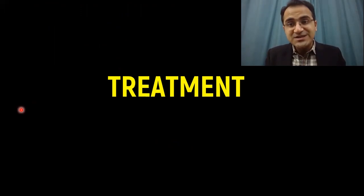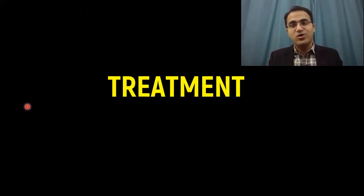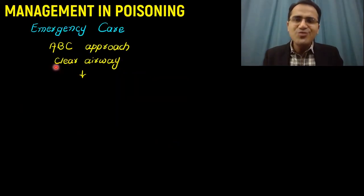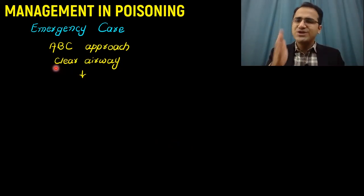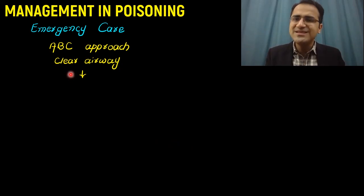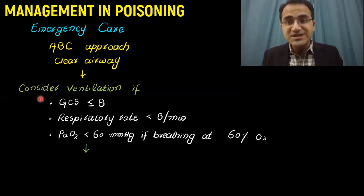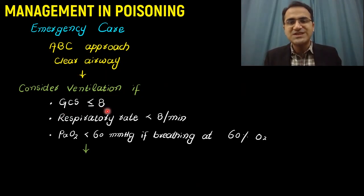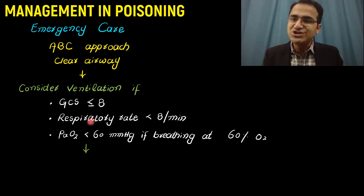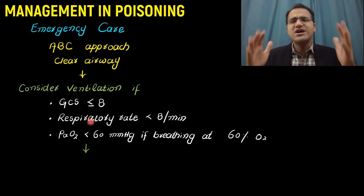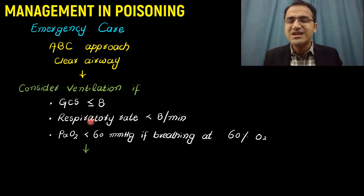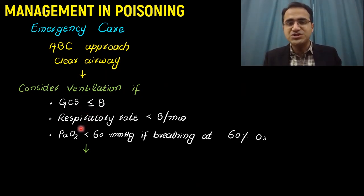Coming to the general management and treatment of poisoning. First and foremost is the ABC approach: airway, breathing, circulation. Protect and clear the airway, and consider intubation and ventilation if the patient has a Glasgow Coma Scale of 8 or less. When these patients present to the emergency department in a deeply comatose state, if their GCS is less than 8, go for intubation.